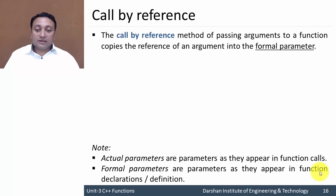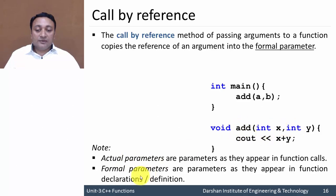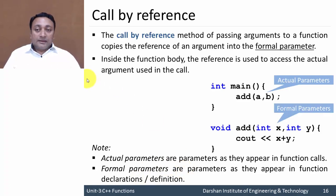There are two types of parameters: actual parameter and formal parameter. Actual parameters are parameters as they appear in function calls, while formal parameters are parameters as they appear in function declarations or definitions. For example, in main I am calling function add with parameters a and b, so here a and b will be actual parameters, while in function definition parameters x and y will be formal parameters.